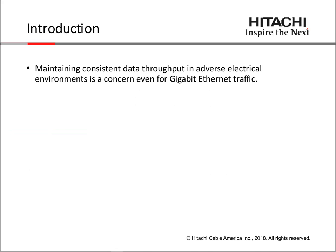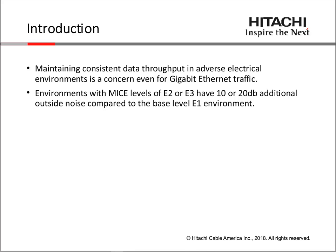Today is all about doing some EFT and CW testing on gigabit cable. One of the concerns being addressed in this paper is trying to maintain consistent data through adverse electrical environments. Although there are 10-gigabit alien crosstalk requirements and several factors of concern in a 10-gigabit system or even higher, there is still good reason to investigate gigabit Ethernet traffic, even though it's been around for quite a number of years. The MICE environments — a standard for describing the electrical and mechanical environments — for E3 has 10 dB or more of additional outside noise that could be coupled to the cable, which puts an additional strain on the electronics attached to the cable.